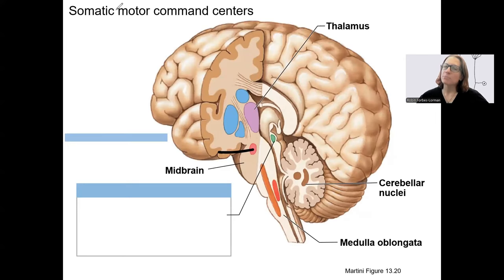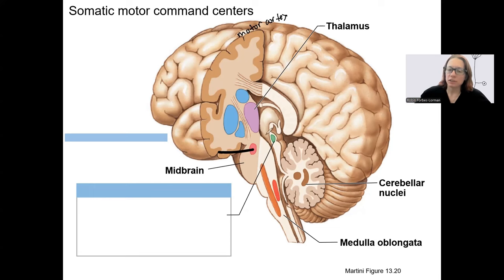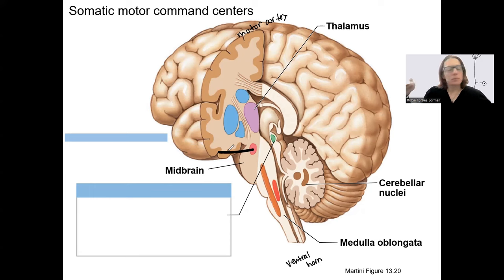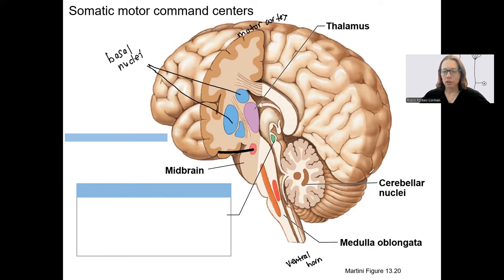Let's look at some of these somatic motor command centers other than the motor cortex. We've already talked about the upper motor neuron traveling down to the ventral horn of the spinal cord. The blue structures shown here are the basal nuclei. We're also going to involve the cerebellum, labeled as the cerebellar nuclei, as part of the cerebellum, and regions in the medulla and midbrain.